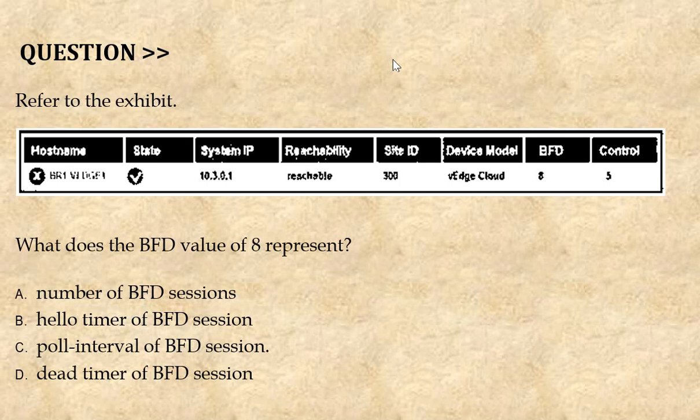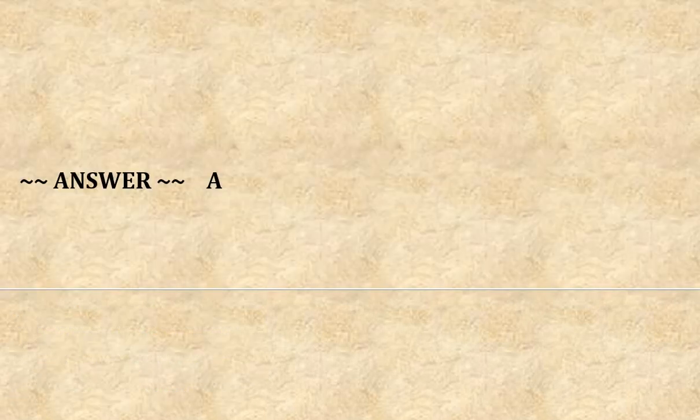Option A: number of BFD sessions. Option B: hello timer of BFD session. Option C: poll interval of a BFD session. Option D: dead timer of BFD session. The correct answer is Option A.